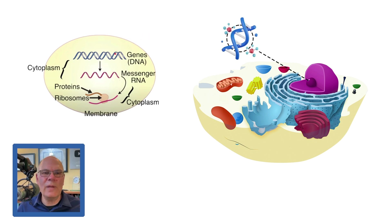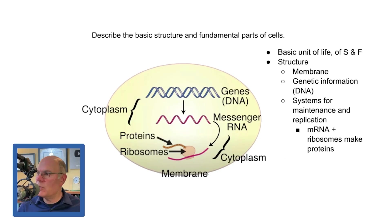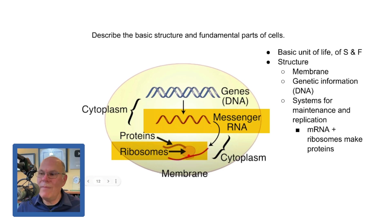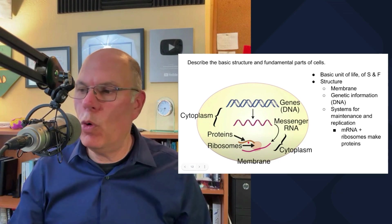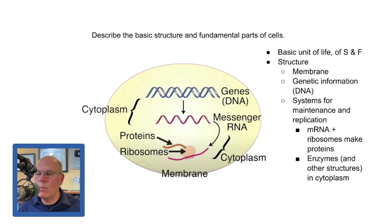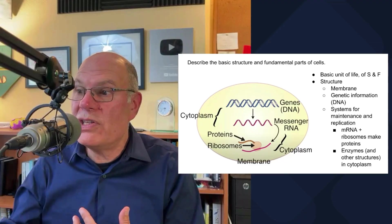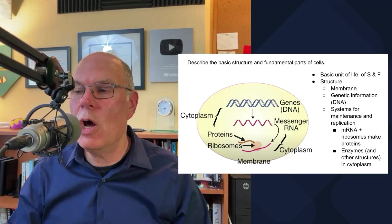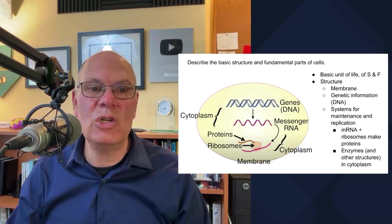All cells have some genetic information, and that's in the form of DNA. There are systems that cells have for maintenance and replication. One of the most important of those systems is a system by which messenger RNA brings information to ribosomes and makes proteins — that's the central dogma of molecular biology. Those proteins, most importantly, are enzymes that control the cell's metabolism, enabling cells to take in what they need from the outside, to process it, to reproduce, to repair itself, and ultimately to release waste, releasing entropy into the outer world.